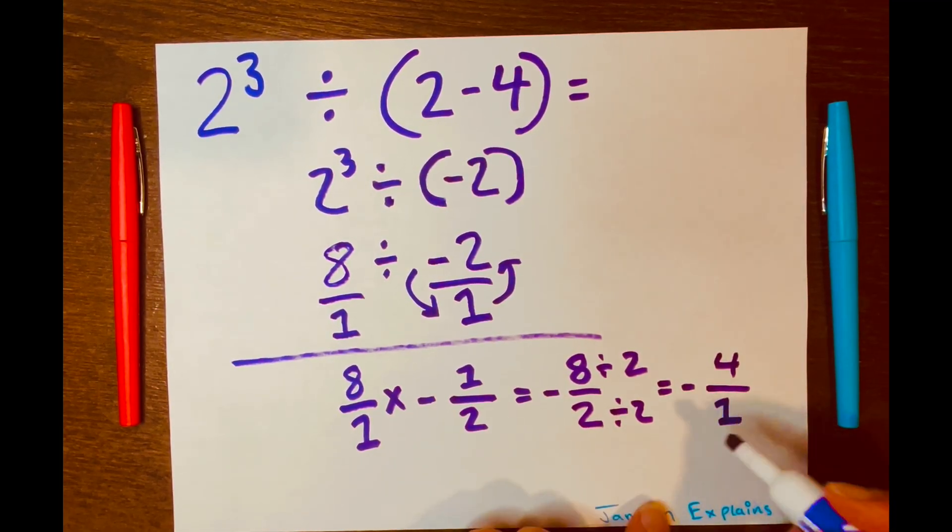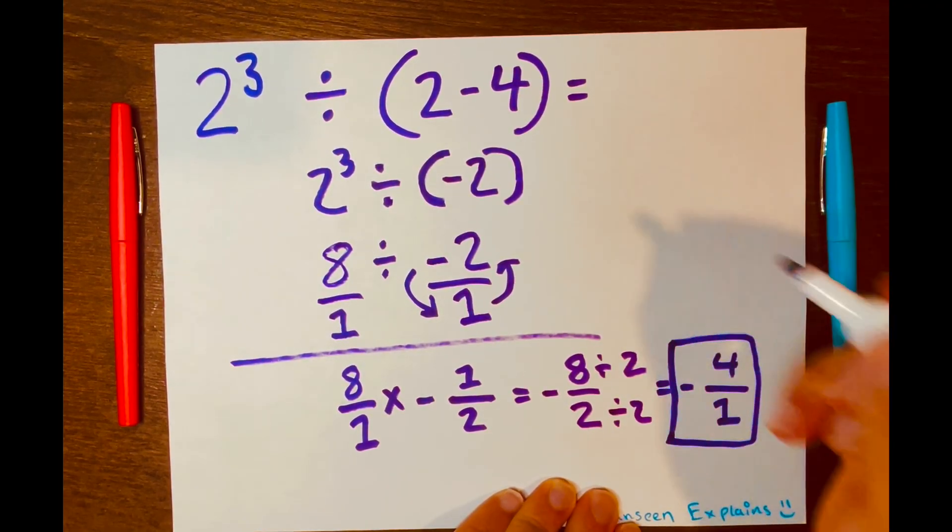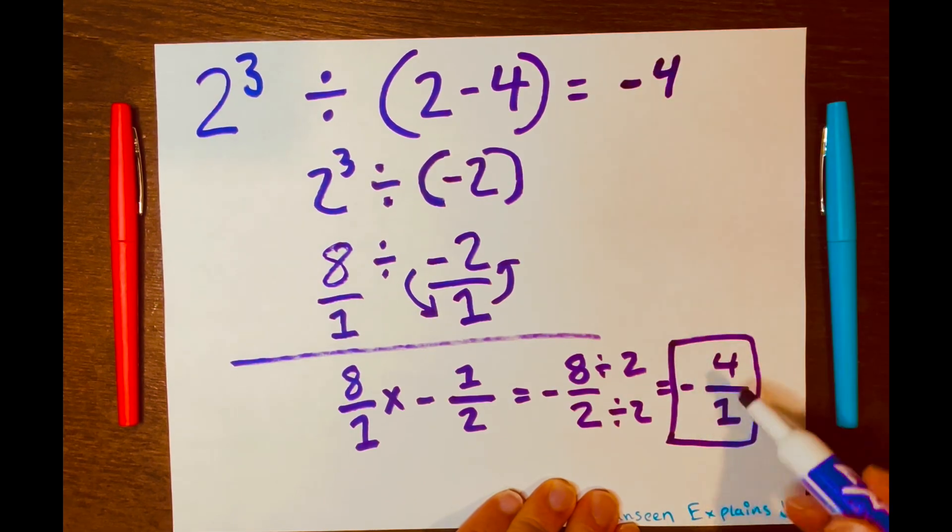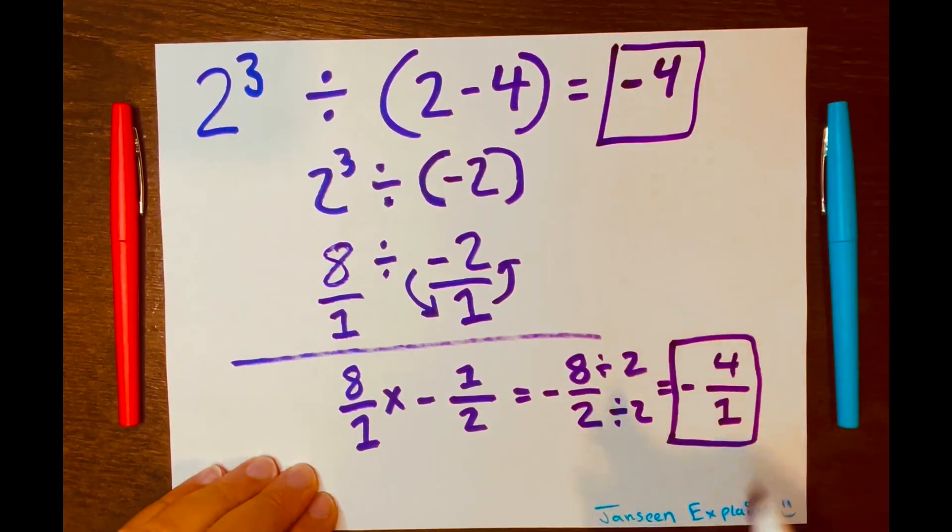So your answer is negative 4 over 1, or negative 4. Because negative 4 over 1 equals negative 4. So your answer is negative 4 as well. And there you go.